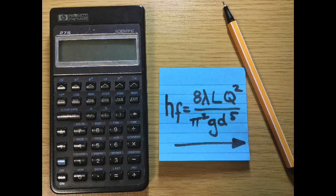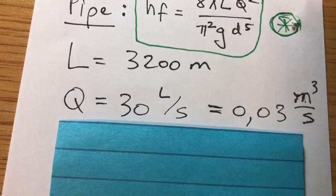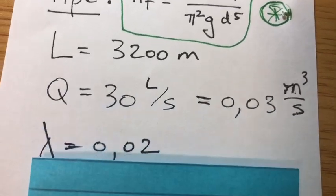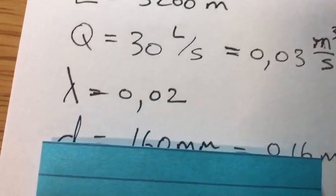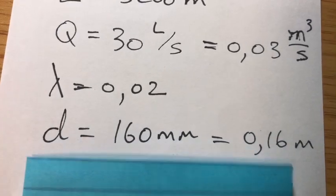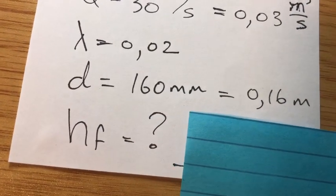Consider a pipe with length 3200 meters, flow rate 30 liters per second, lambda 0.02 and the diameter 160 millimeters. What is HF, friction head loss?